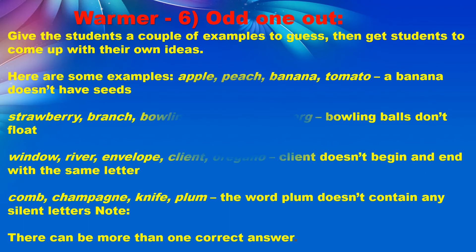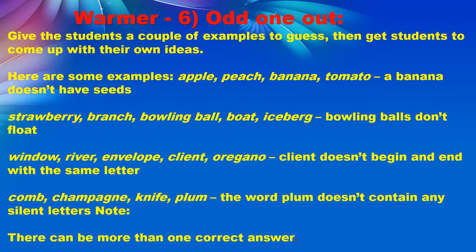The next warmer is 'Odd One Out' — which may be a little familiar to you. Give the students a couple of examples to guess, then get students to come up with their own ideas. The TAG coordinator writes a bunch of examples on papers and distributes them to groups or pairs. They must find out the odd one out and, very importantly, give the reason. If the answer is correct, encourage that group.